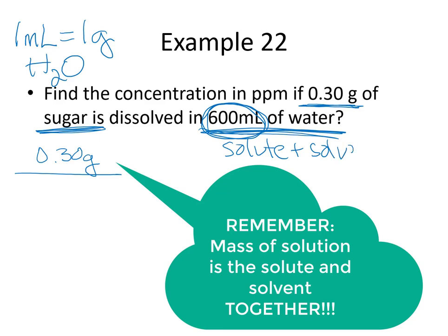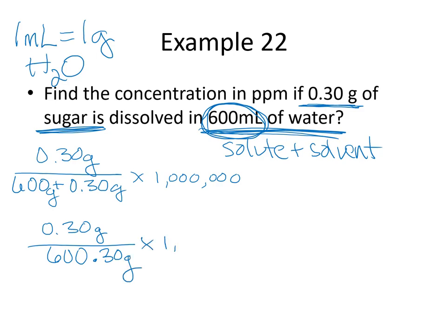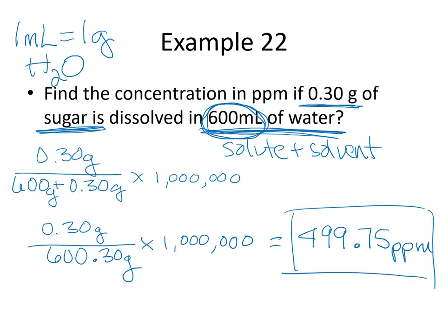And a lot of people would go straight to this 600 milliliters and go oh that's in 600 milliliters of water. But remember your solution is your solute plus your solvent. So we have to add those together. So this would be 600 plus 0.30 grams times one million. So that means we have 0.30 grams over, we're going to add those two together, 600.30 grams times one million. And when I work that out I get 499.75 parts per million. And that is my final solution in this case.